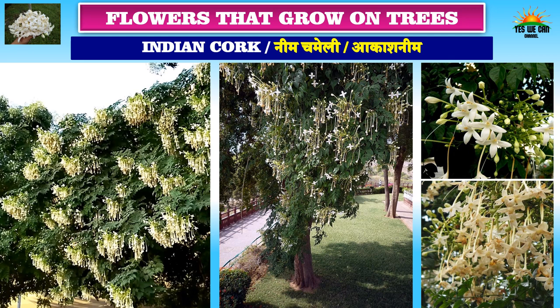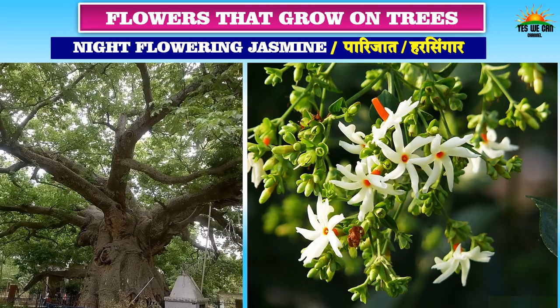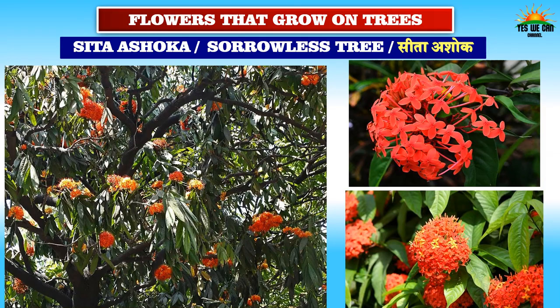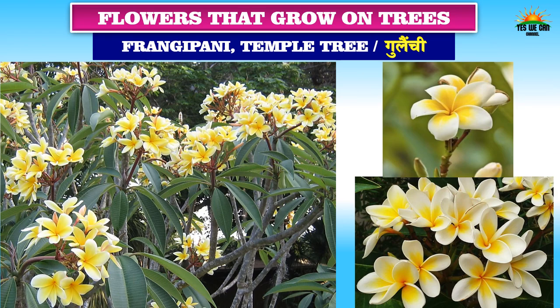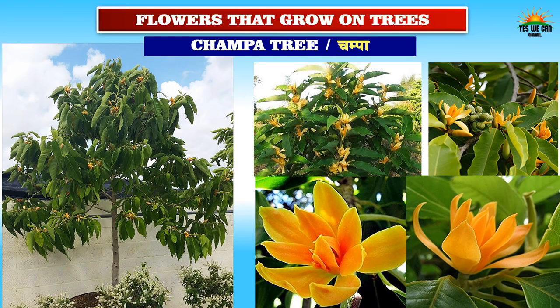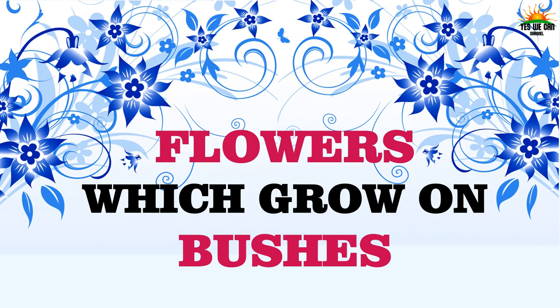Such beautiful yellow flowers growing on trees! This is Golden Shower, called Amaltas in Hindi. This is Indian Cork, called Neem Chameli or Akash Neem in Hindi. The famous night-flowering jasmine, called Parijat or Harsingar in Hindi. Sita Ashok or sorrowless tree. Frangipani or temple tree, called Gulanchi in Hindi. And this is the Champa tree with beautiful yellow fragrant flowers.